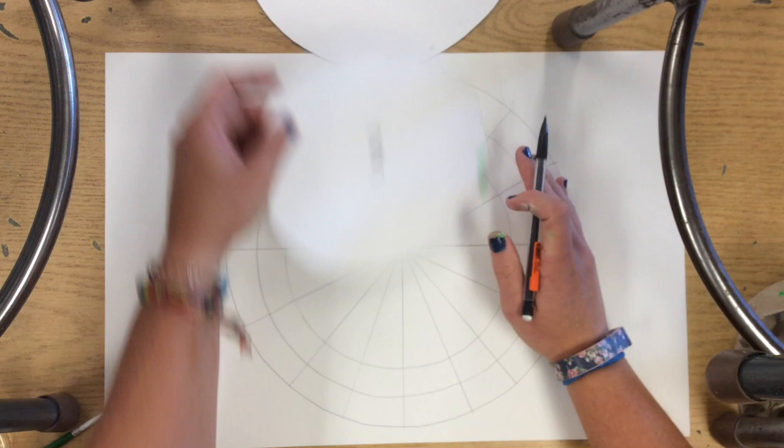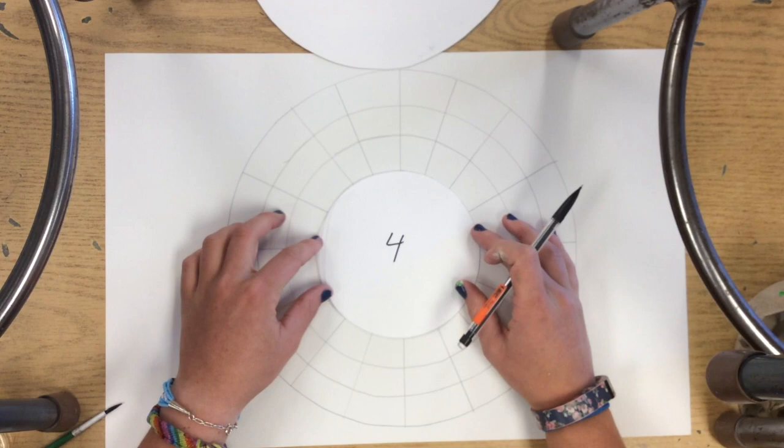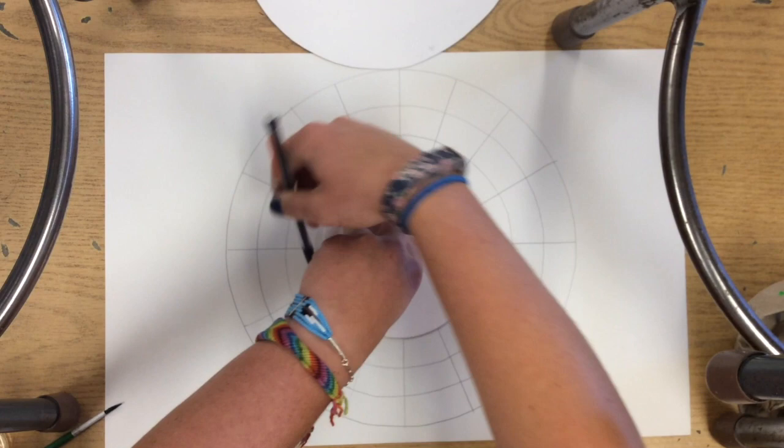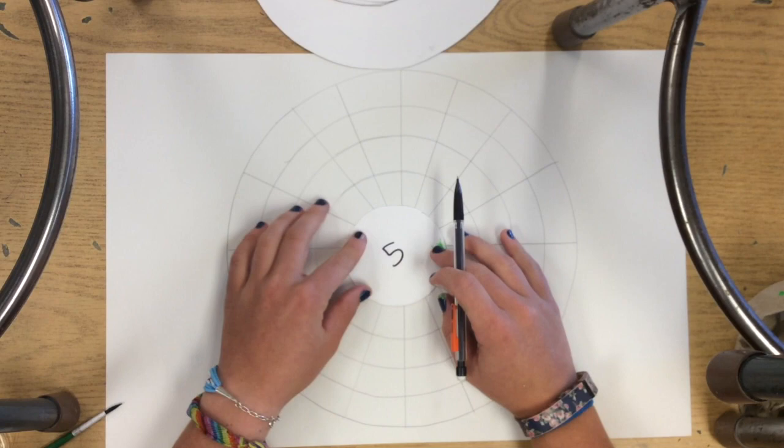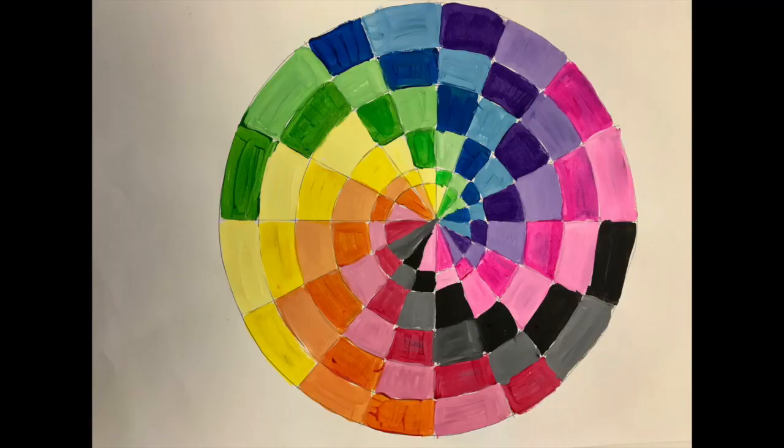But if you want them to be perfect, you're just going to have to do a lot more measuring. Smaller circle number four, line it up, trace around it. And then we're going to go ahead and finish it off with circles five and six.